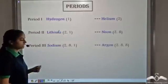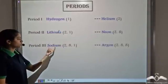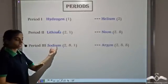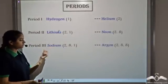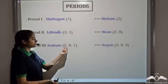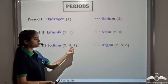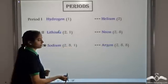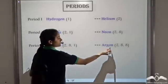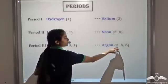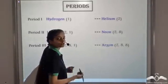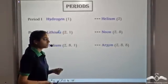The third period: sodium is the first element, with electronic configuration 2.8.1. The last element, argon, has electronic configuration 2.8.8.